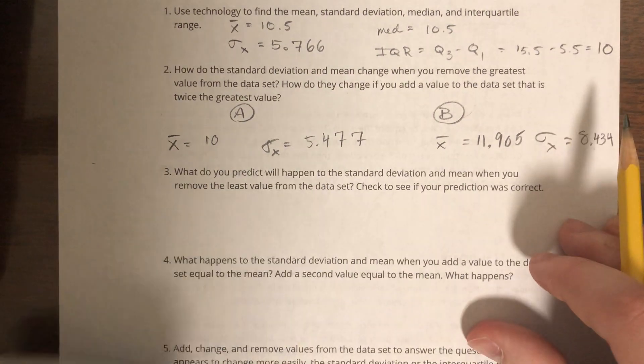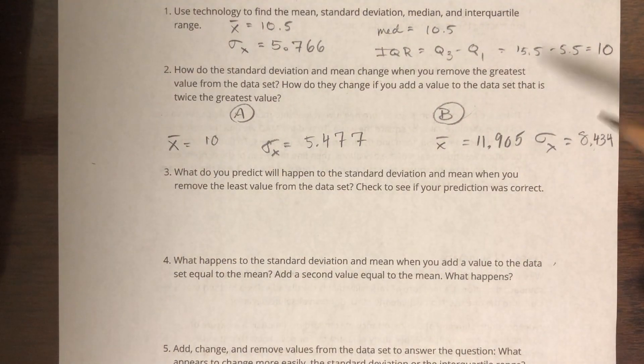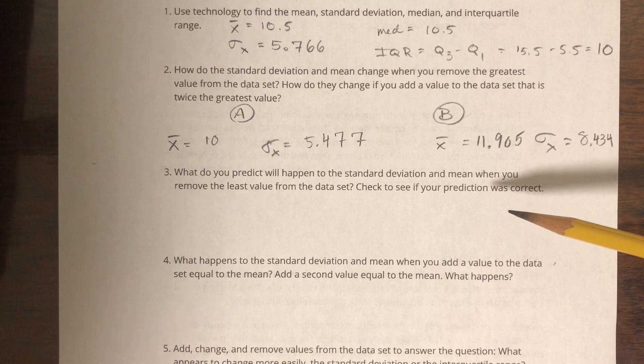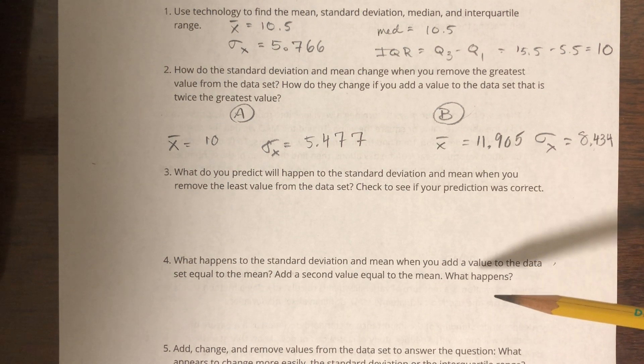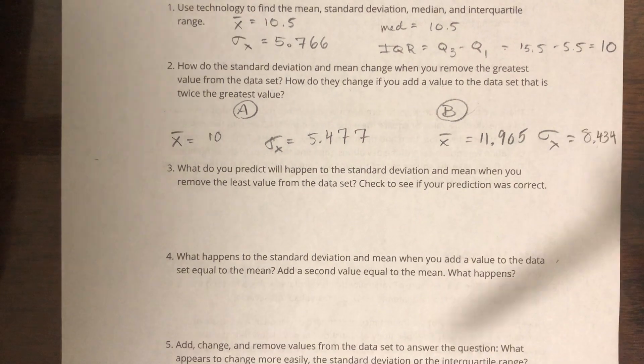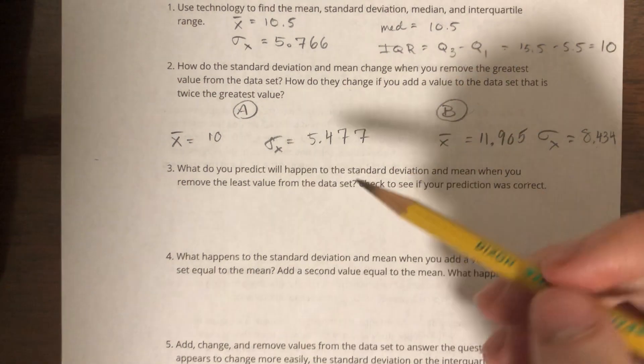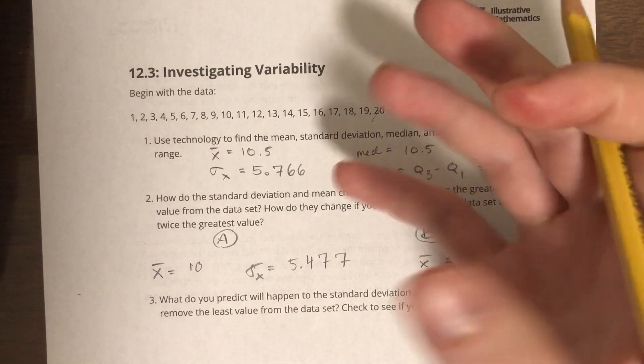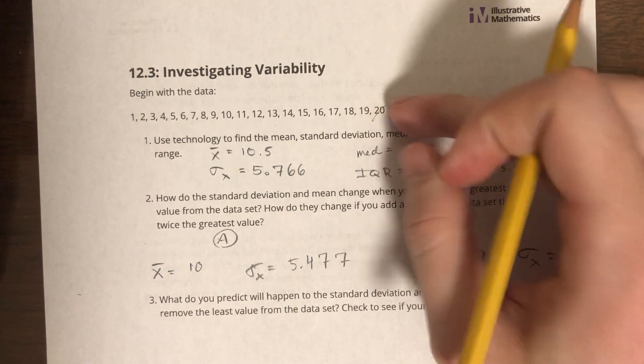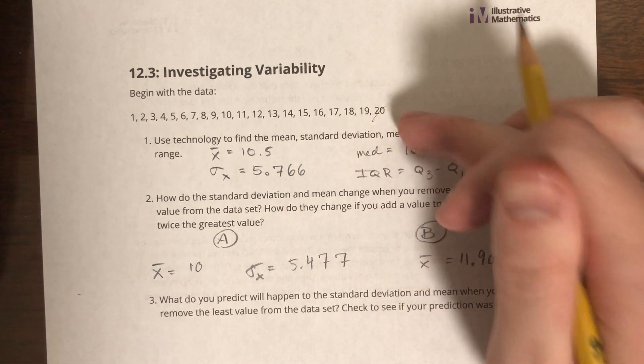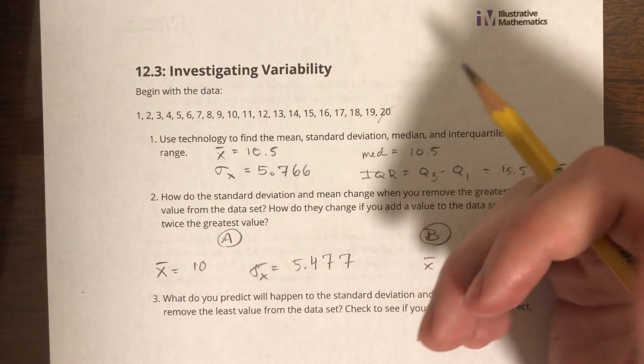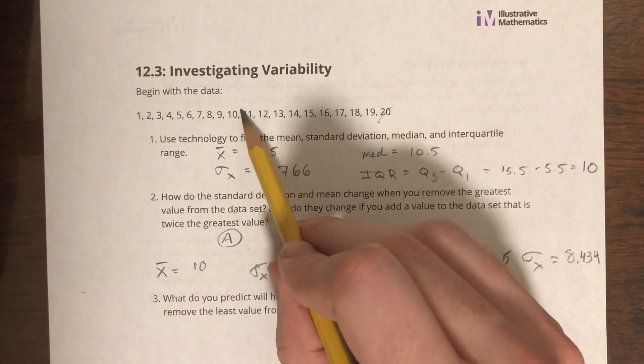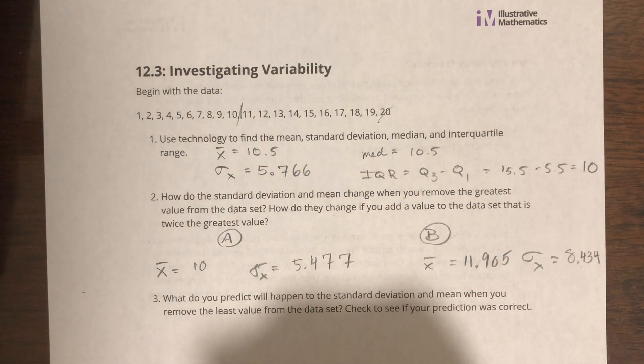So when you take away extremes, let me make sure they're not asking this question later on. They don't ask it, okay. So when you take away extremes, when I take away 20, that takes away values from the edges of the data set. Values on the edges of the data set are what are pulling that standard deviation up, right? 20 is super far away from this mean of 10.5.